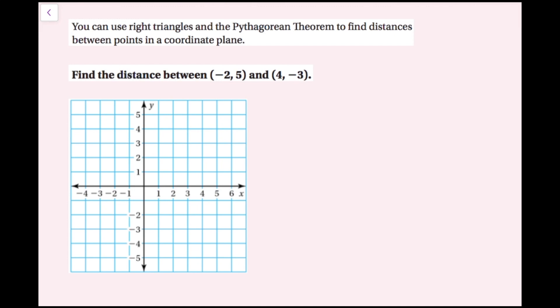You can use right triangles and the Pythagorean Theorem to find distances between points in a coordinate plane. For this example, we're going to find the distance between negative 2 comma 5 and 4 comma negative 3. I'll plot these points: negative 2 comma 5 is here, and 4 comma negative 3 is here. The way we'll do this is by drawing a right triangle that helps us figure out the distance — I'll draw a dashed line, and placing a point here makes a complete horizontal segment and a vertical segment, forming a right triangle.